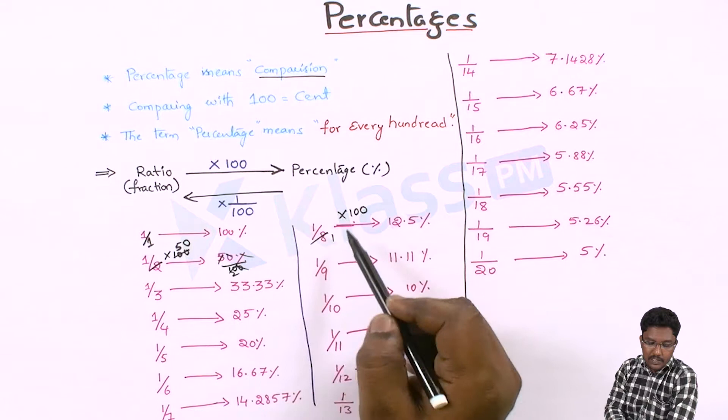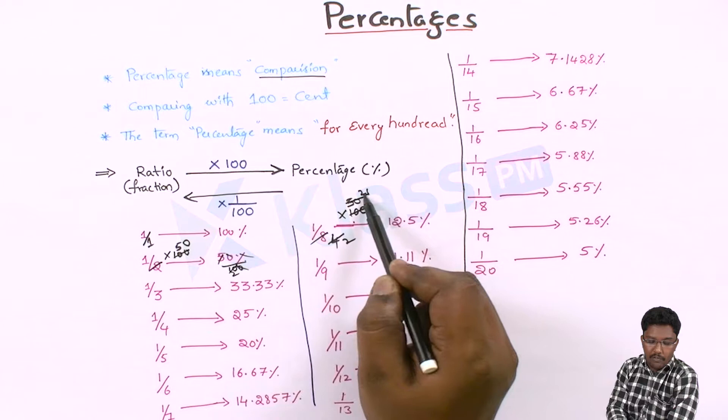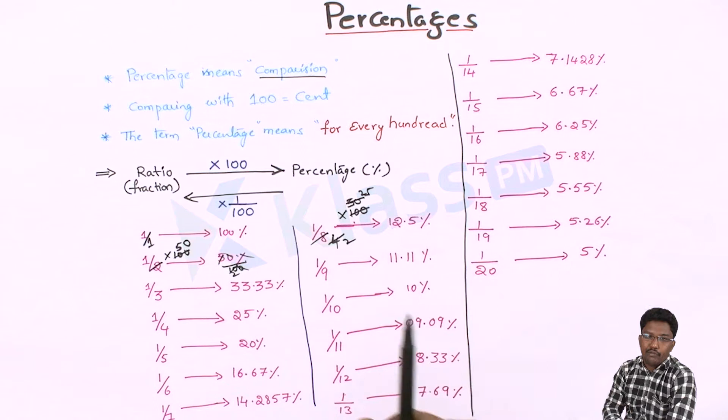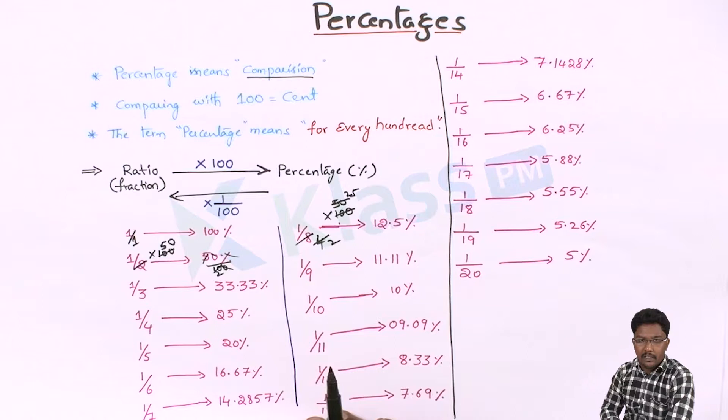Let's solve how 1/8 is 12.5: multiply by 100 — what is half of 25? 12.5, that is 12.5%. We are converting a fraction into a percentage. Now we are going to learn what is the trick to remember these values.